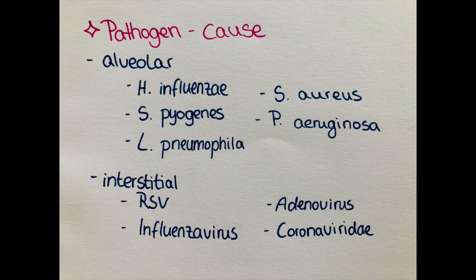For interstitial pneumonia, especially the respiratory syncytial virus, influenza virus and parainfluenza virus, adenovirus, and the Coronaviridae are known. Of the Coronaviridae family, it's primarily SARS-CoV-2 and MERS-CoV-1.